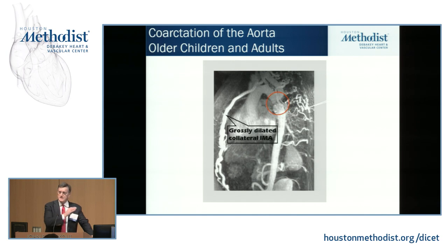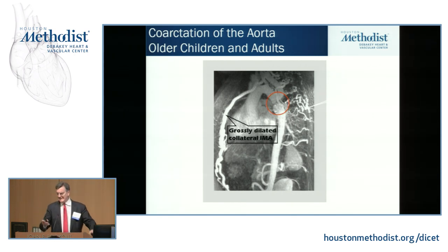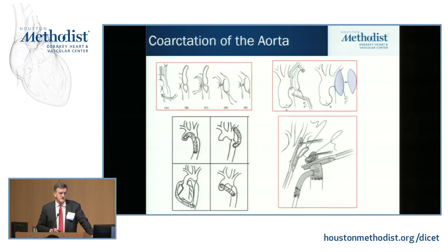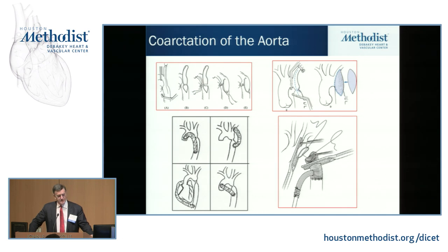As babies and small children get bigger, the collaterals develop and enlarge. In an older child with coarctation, the amount of collaterals can be extraordinary — a virtual rat's nest — which makes mobilization and direct end-to-end anastomosis more difficult and treacherous. So there are different operations for older kids and young adults, involving rotational flaps, prosthetic patches, or extra-anatomic bypasses. What I prefer in this situation is an anatomic reconstruction with a tube graft.